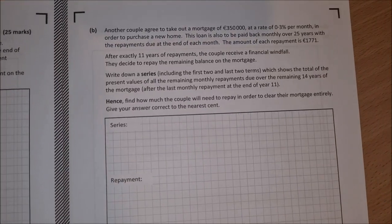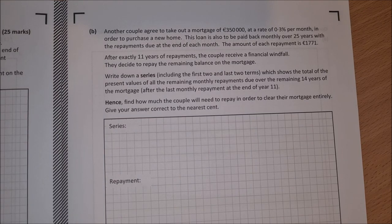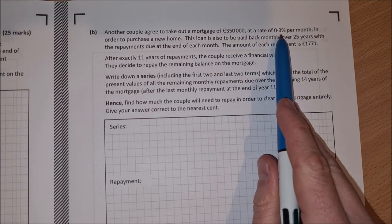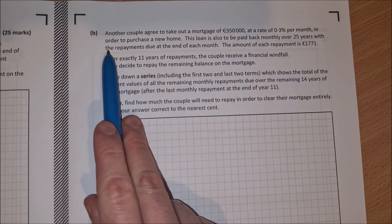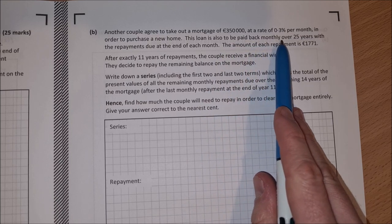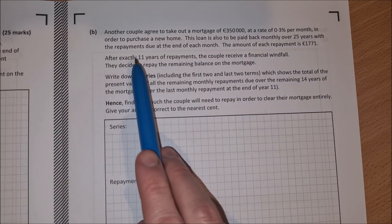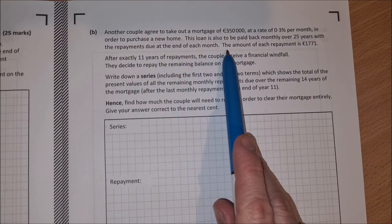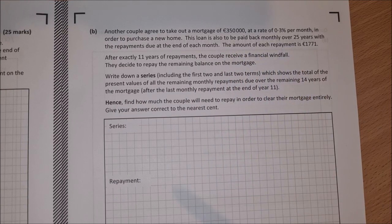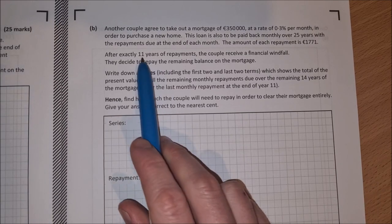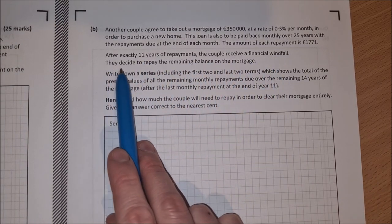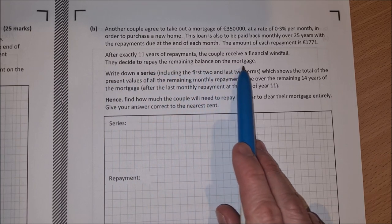Onto part B then. Part B says another couple agree to take out a mortgage of £350,000 at a rate of 0.3% per month in order to purchase a new home. This loan is also to be paid back monthly over 25 years with the repayments due at the end of each month. The amount of each repayment is €1,771. After exactly 11 years of repayments, the couple receive a financial windfall. They decide to repay the remaining balance of the mortgage.